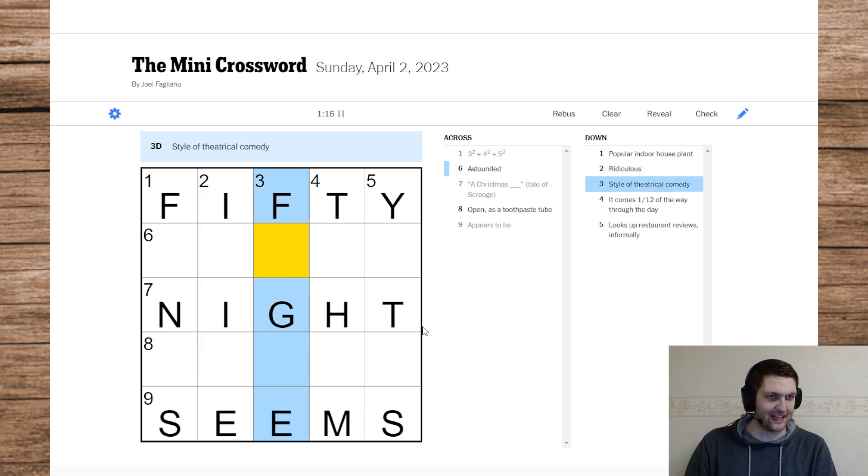I feel like night is wrong. It comes one twelfth of the way through the day. What? It comes one twelfth of the way through the day. What? It comes one twelfth of the way through the day. I mean, it's two hours, but what?